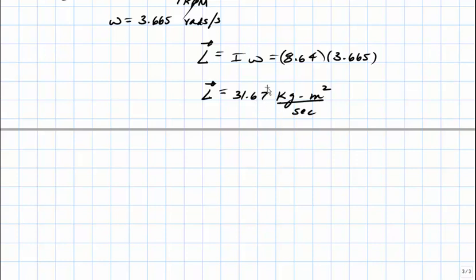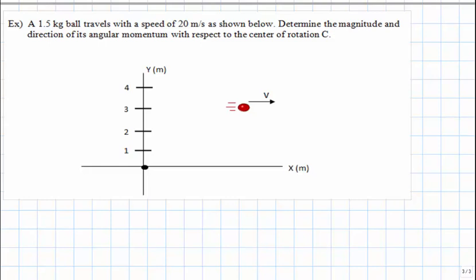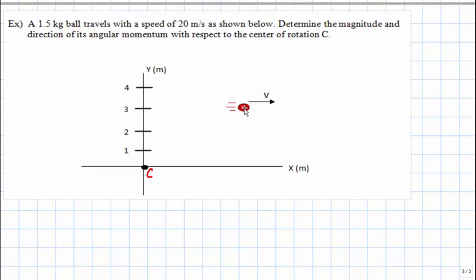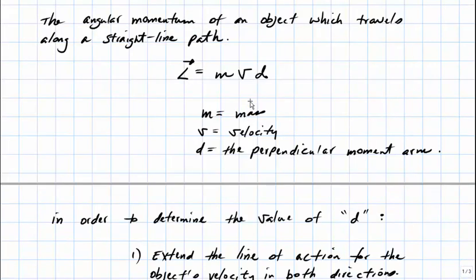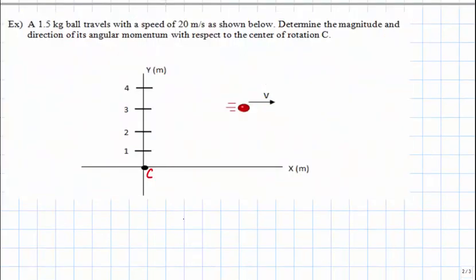Let's take a look at another example. A 1.5 kilogram ball travels with a speed of 20 meters per second. Determine the magnitude and direction of its angular momentum with respect to the center of rotation C. The center of rotation is at the origin. This object is traveling along a straight-line path, so we use L equals M times V times D. The mass and velocity are known; the only unknown is the perpendicular moment arm D.